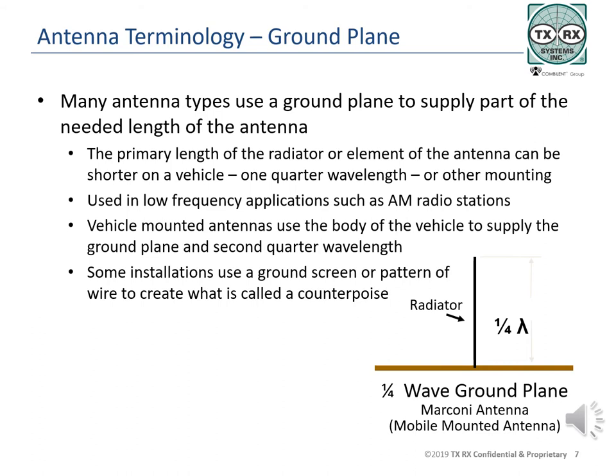In the same way, vehicle antennas can be mounted on the ground plane supplied by the vehicle body itself. This allows the antennas to be shorter but have about the same output as a half wave dipole antenna would if mounted on the vehicle. A quarter wavelength ground plane is essentially one half of a dipole antenna operated over the ground or on the ground on what is called a counterpoise.